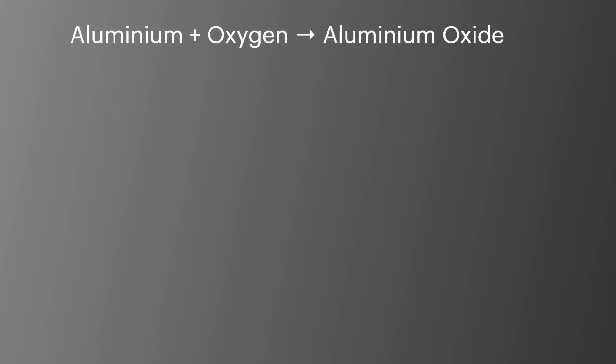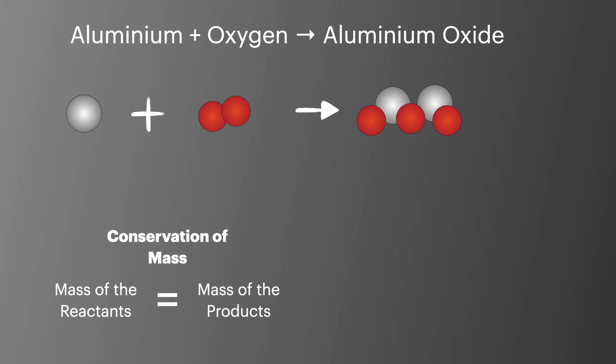We can now take a look at the reaction of aluminum with oxygen to form aluminum oxide. This is where aluminum reacts with oxygen to make Al2O3, aluminum oxide. This is a simple reaction, but as it's shown here it does not obey the conservation of mass law. This means the mass of the reactants must equal the mass of the products.